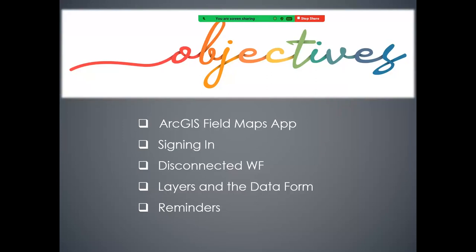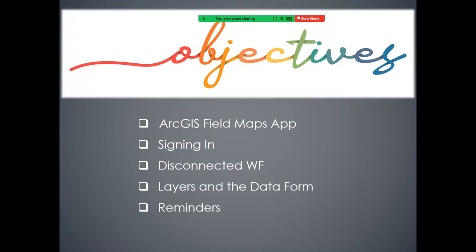Here's an outline of what we'll cover today: we'll look at the ArcGIS Field Maps application in the context of signing in, including two available maps — one official data collection map and one training version. We'll overview the disconnected workflow, look at the layers in the exotic moth application, and enter some data in the data form together. We'll wrap up with reminders.